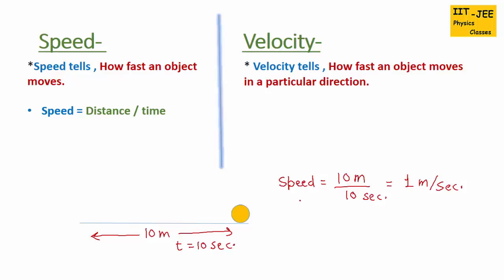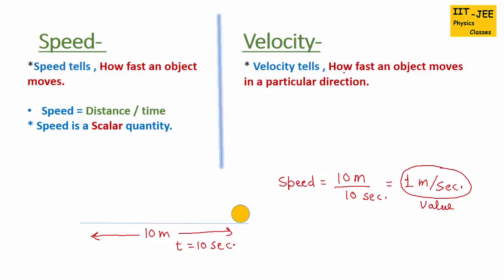Speed is a scalar quantity — it includes only a magnitude value. Velocity, on the other hand, tells how fast an object moves in a particular direction, so it includes both the value of the object's fastness and the direction of motion.